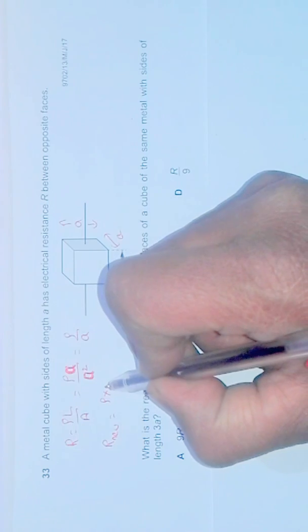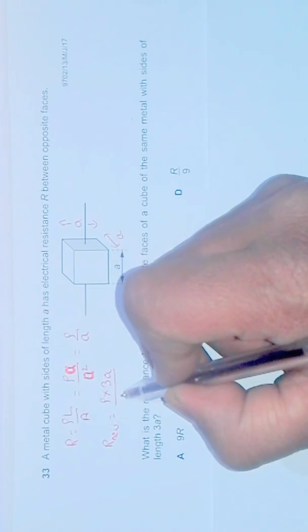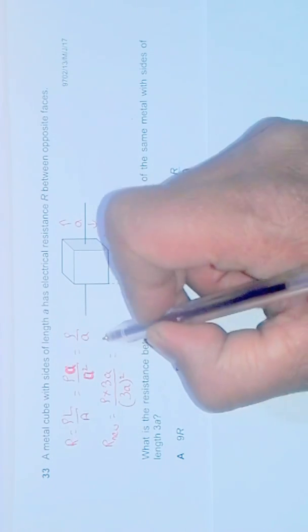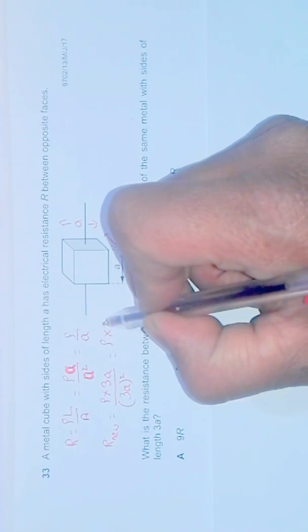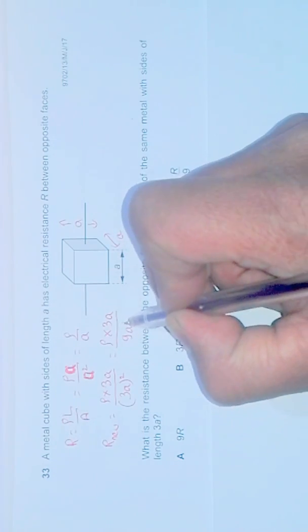So it is rho into 3A divided, our A will be 3A and then squared. So it will give us rho into 3A divided by 9A square.